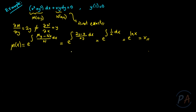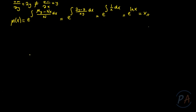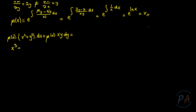When I multiply this integrating factor into the equation, the result is going to be an exact differential equation. So let me multiply: μ(x)·(x² + y²)dx + μ(x)·xy dy = 0. Since μ(x) = x, this gives (x³ + xy²)dx + x²y dy = 0.